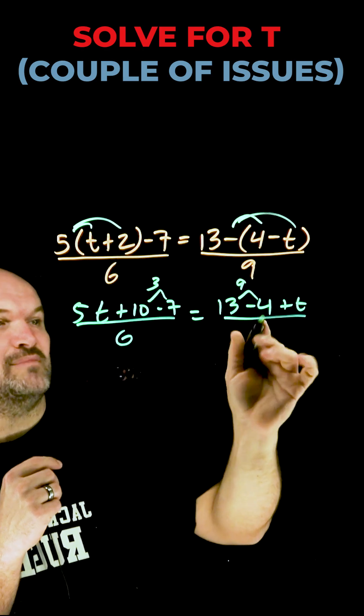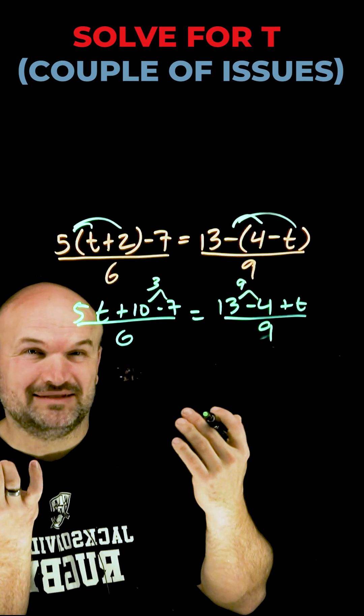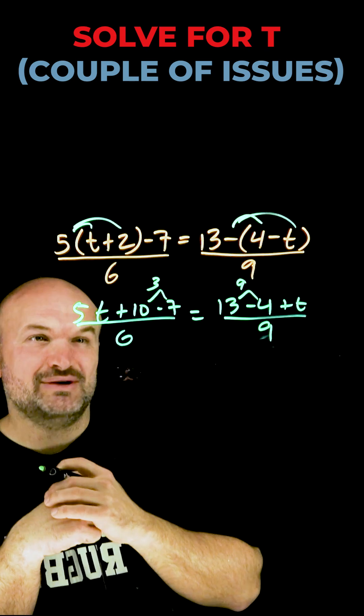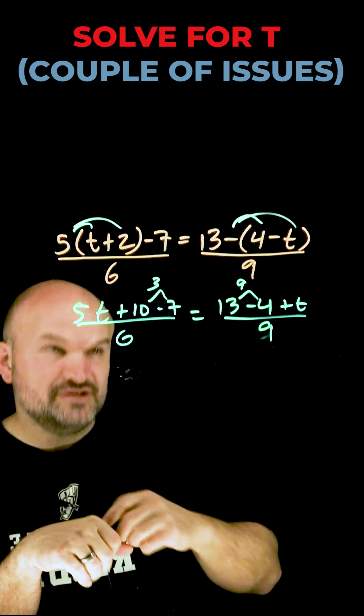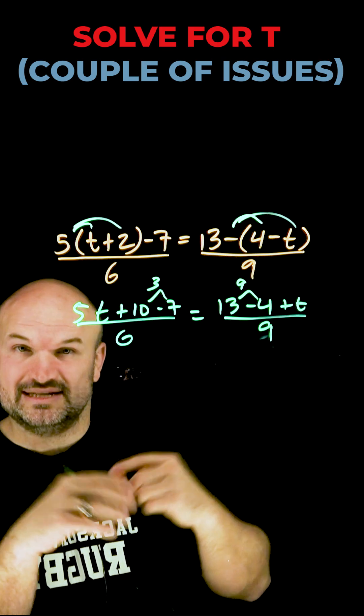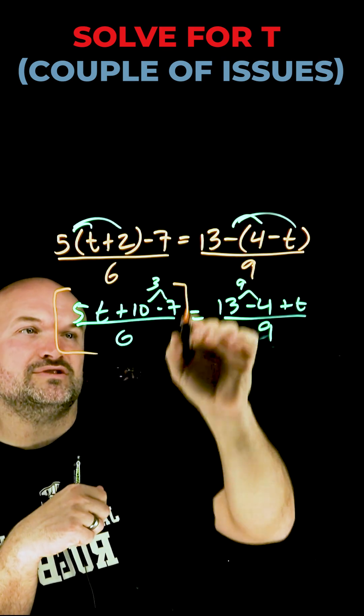Now, what I simply need to do is get rid of my denominators. So you can see I have a 6 and a 9. I don't want to be dividing by a number. I need to solve for t. So I need to undo this division of 9 and 6. So to do that, I need to multiply each of these sides of the equations by the LCD, the smallest number that 6 and 9 evenly divide into. That number is going to be a 18.